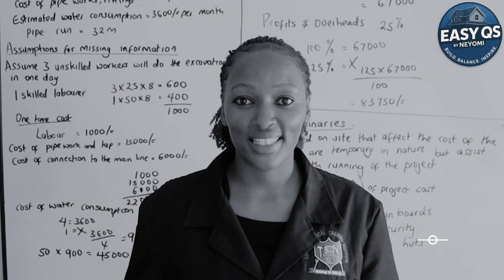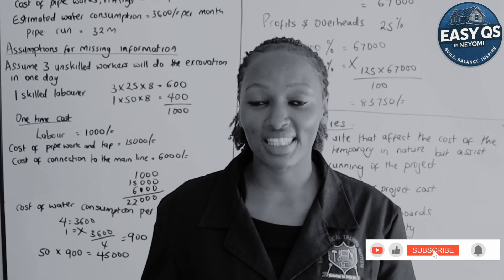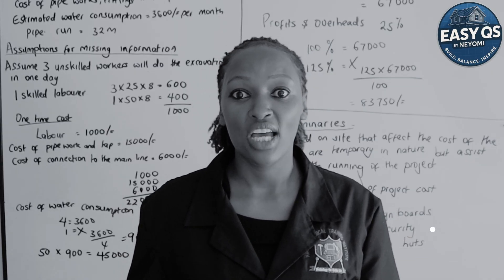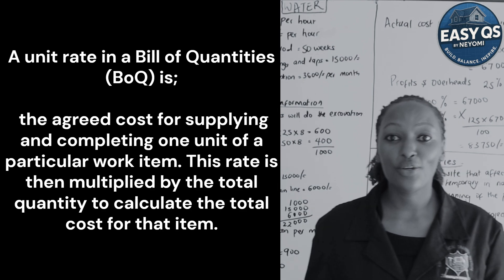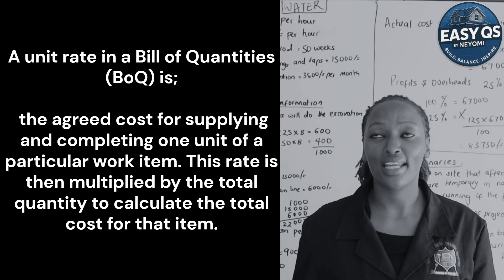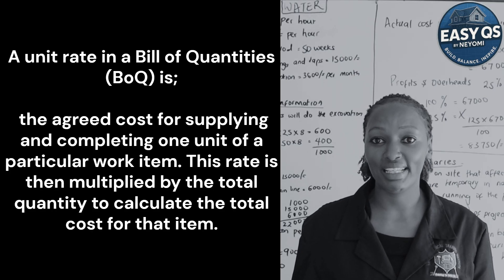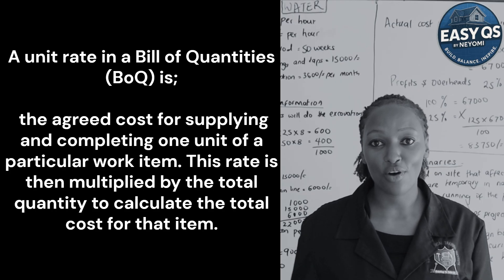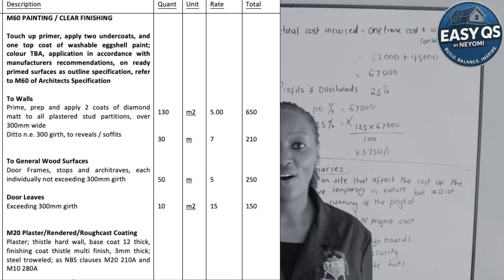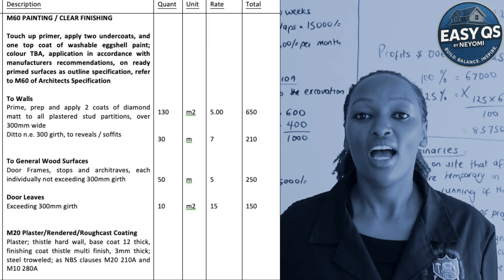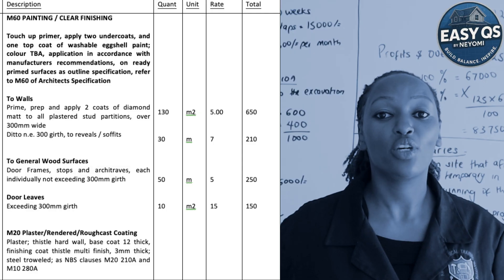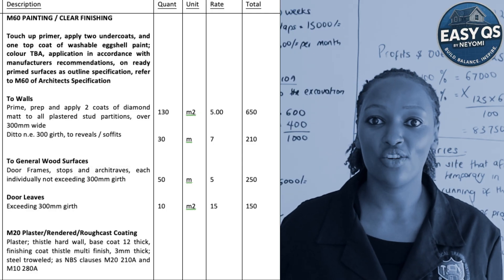I want to take you step by step to understand what unit rates are, where they are used, and how they are calculated. Unit rates are the cost per unit. When we are measuring buildings and all elements — walls, concrete, floor — we price it per unit. A unit could be a meter, a meter square for area, a cubic meter for volume, or a number, for example how many doors.